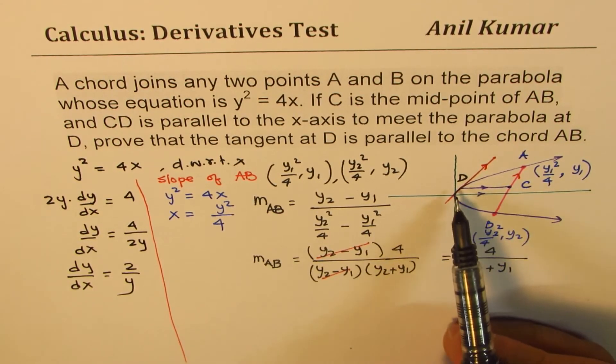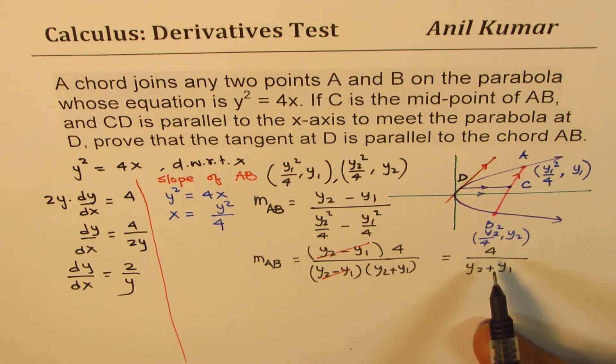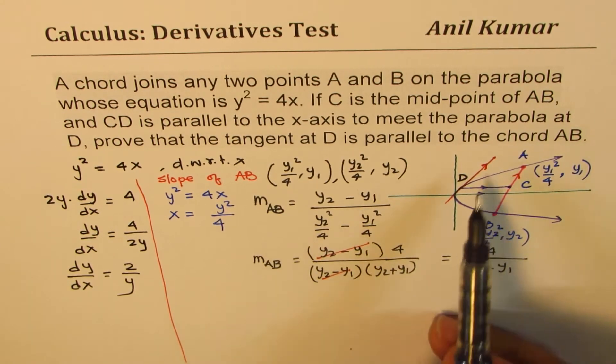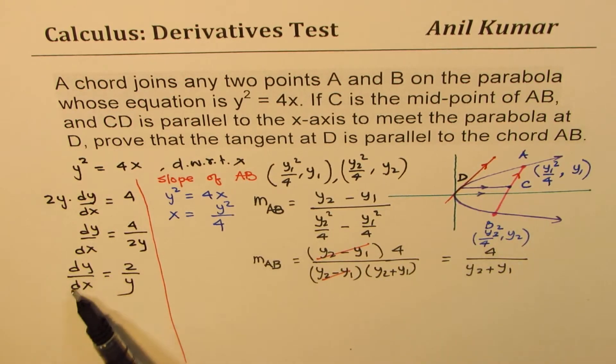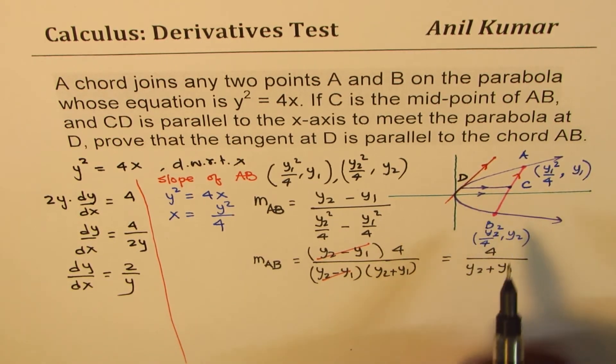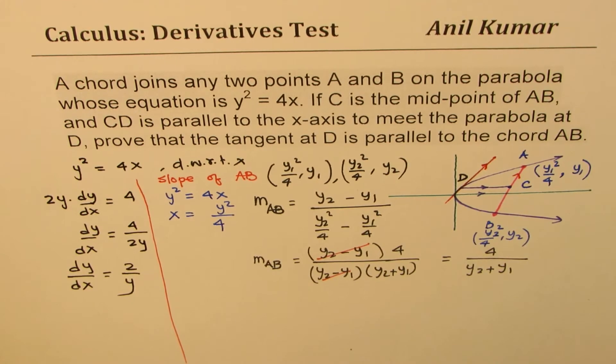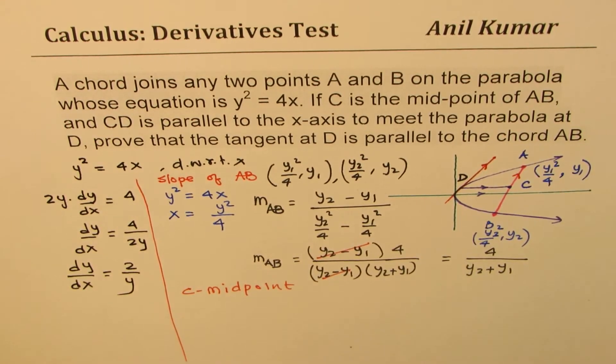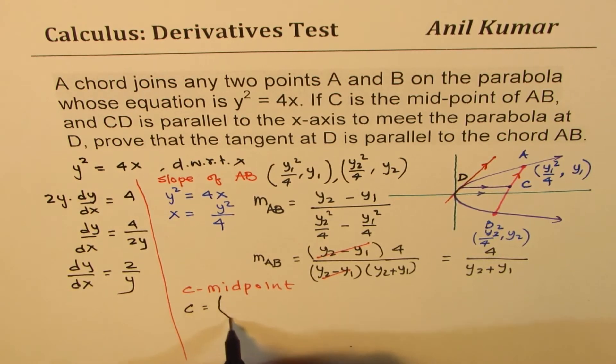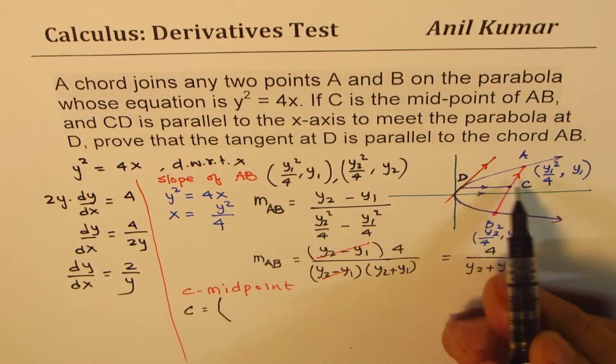So we know that slope of line AB is 4/(y₂ + y₁). So we want to prove that slope at D is also this. That's the whole idea. Let's try to find the slope at D. Now you can get an idea that slope at D is 2/y. So we need to find the y value of this point. What are we given? We are given that C is the midpoint.